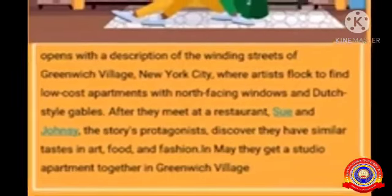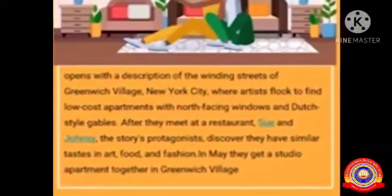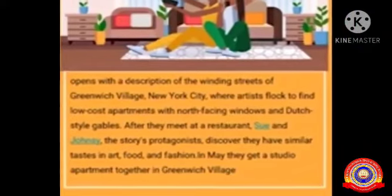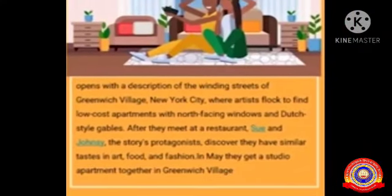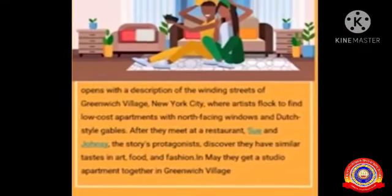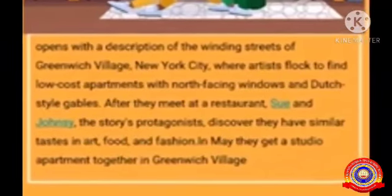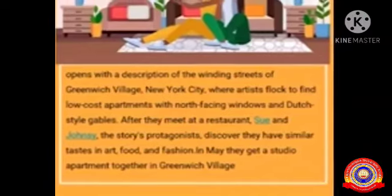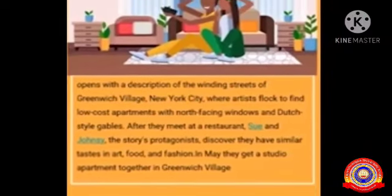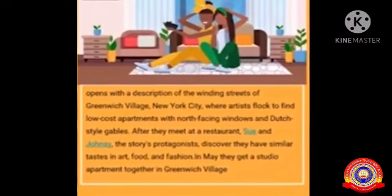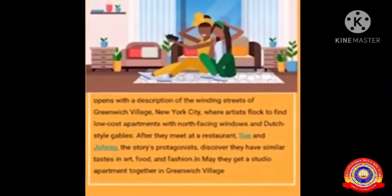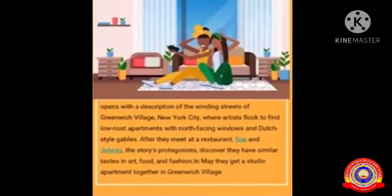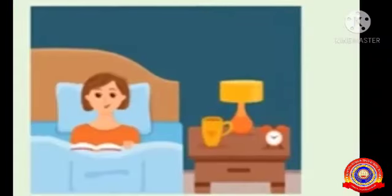The story opens with a description of the winding streets of Greenwich Village, New York City. Many artists flock there to find low-cost apartments with north-facing windows and Dutch-style gables. After they met at a restaurant, Sue and Johnsy, the story's protagonists, discover they have similar tastes in art, food, fashion, etc. In May, they get a studio apartment together in Greenwich Village.